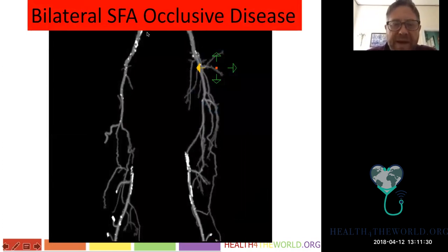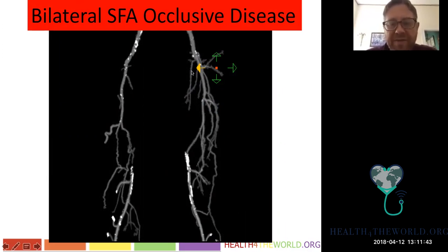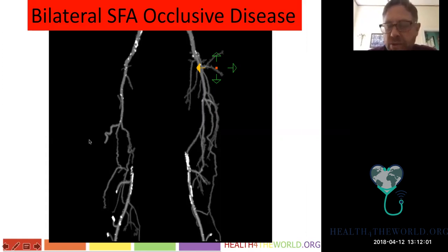In this different patient we have bilateral occlusions of the SFA — no filling in the normal SFA location. Instead we see too many vessels, which is the profunda coming down giving off perforating branches to fill the SFA, seen on both sides. The reason is extensive calcification from atherosclerosis.